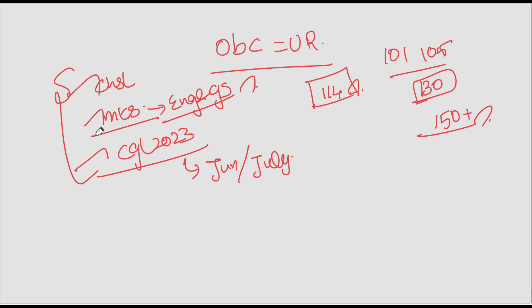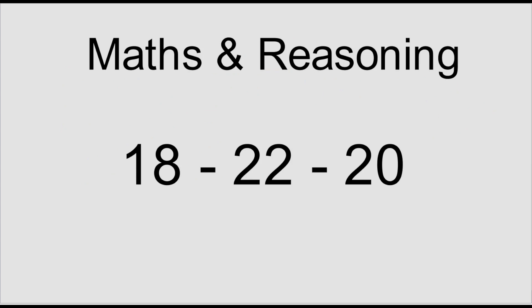There are 4 sections in Tier 2. You need to focus on all of them. The sections include Math, Reasoning, English and GS. This is the structure you need to be ready for in Tier 2.